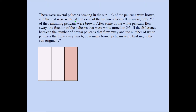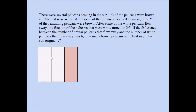Now we're going to work on this line: after some of the brown pelicans flew away, only two sevenths of the remaining pelicans were brown. Some of these brown pelicans are flying away, and after they're gone, if you consider all the leftover pelicans, two sevenths of those will be brown. But since the brown strip is going to change, I can infer that five sevenths of the remaining pelicans must be white. Since the white pelicans don't change here — only the brown ones are flying away — I am going to divide the whole rectangle into five equal parts.